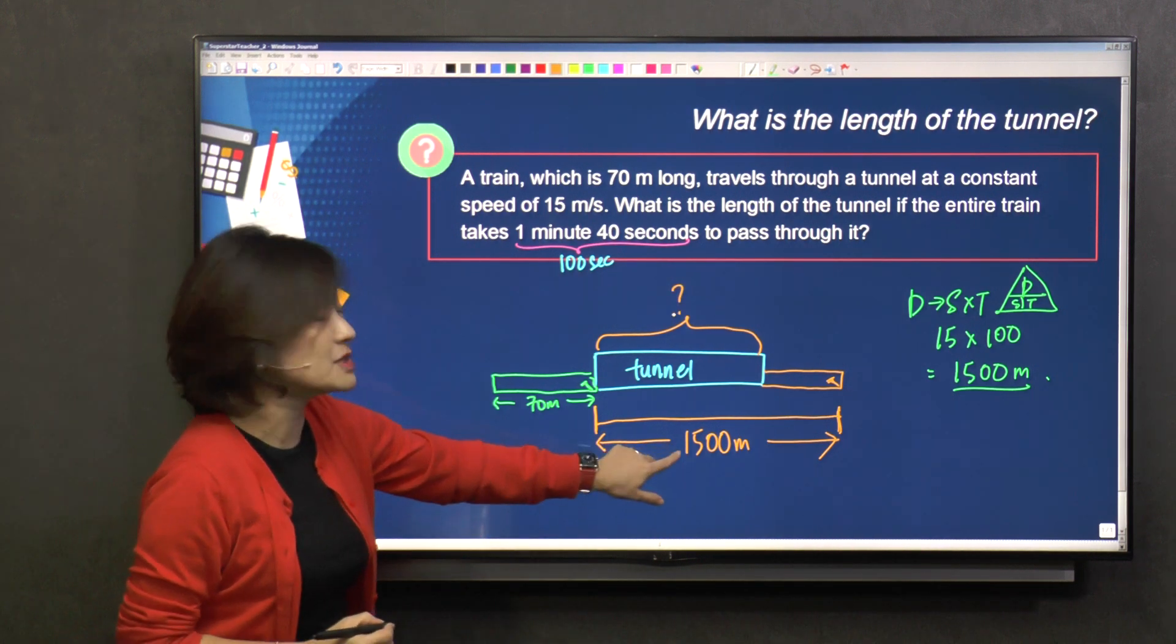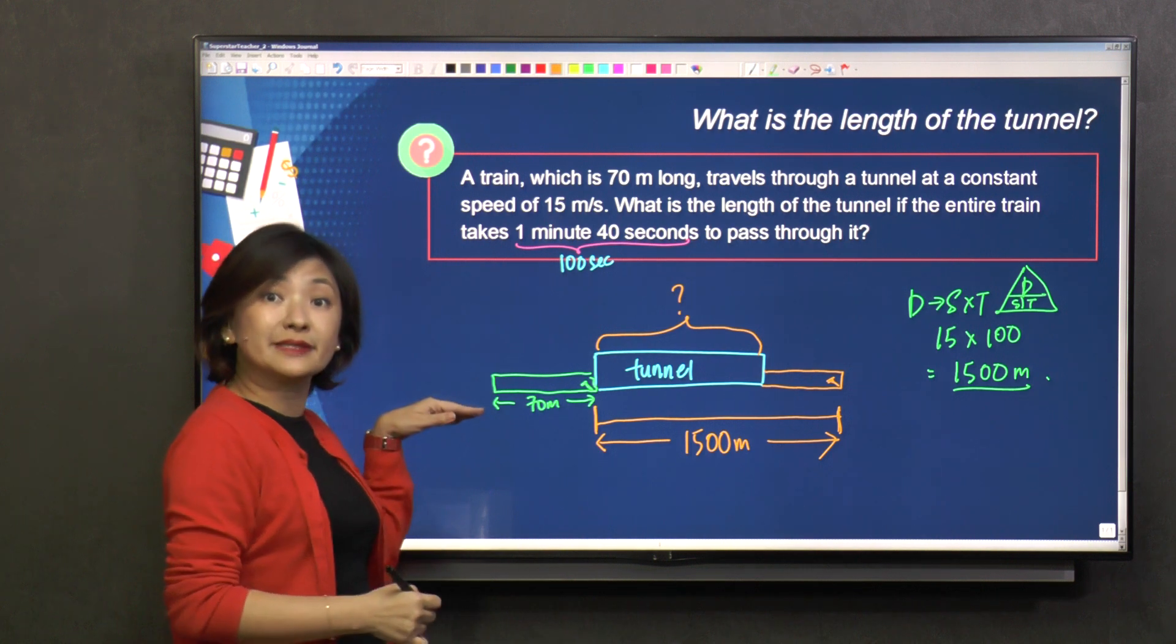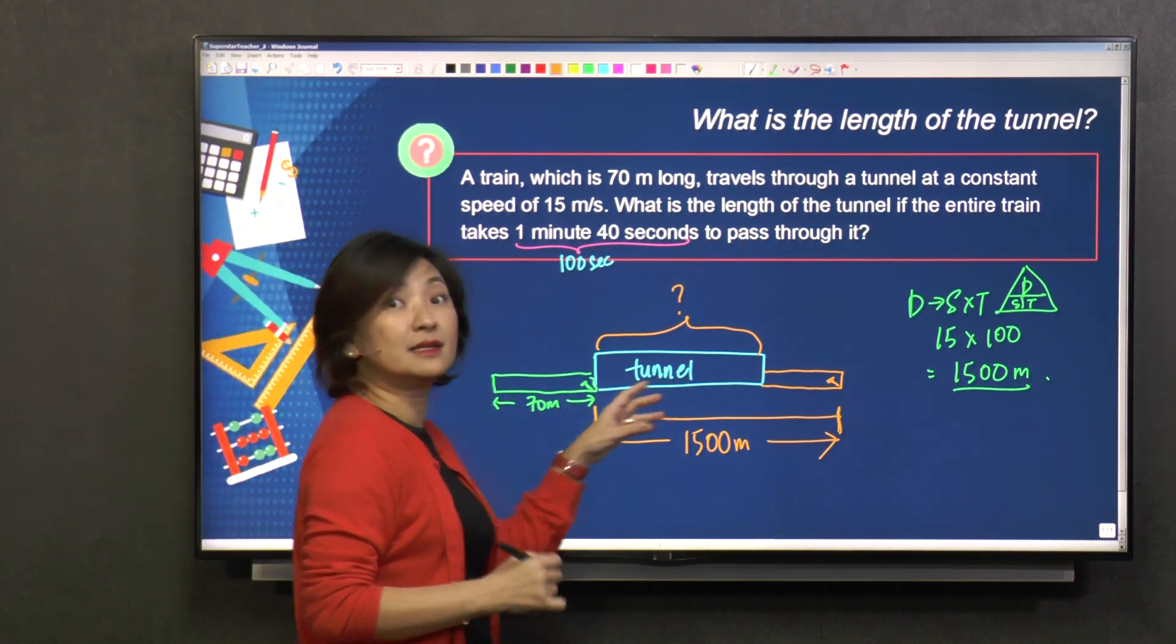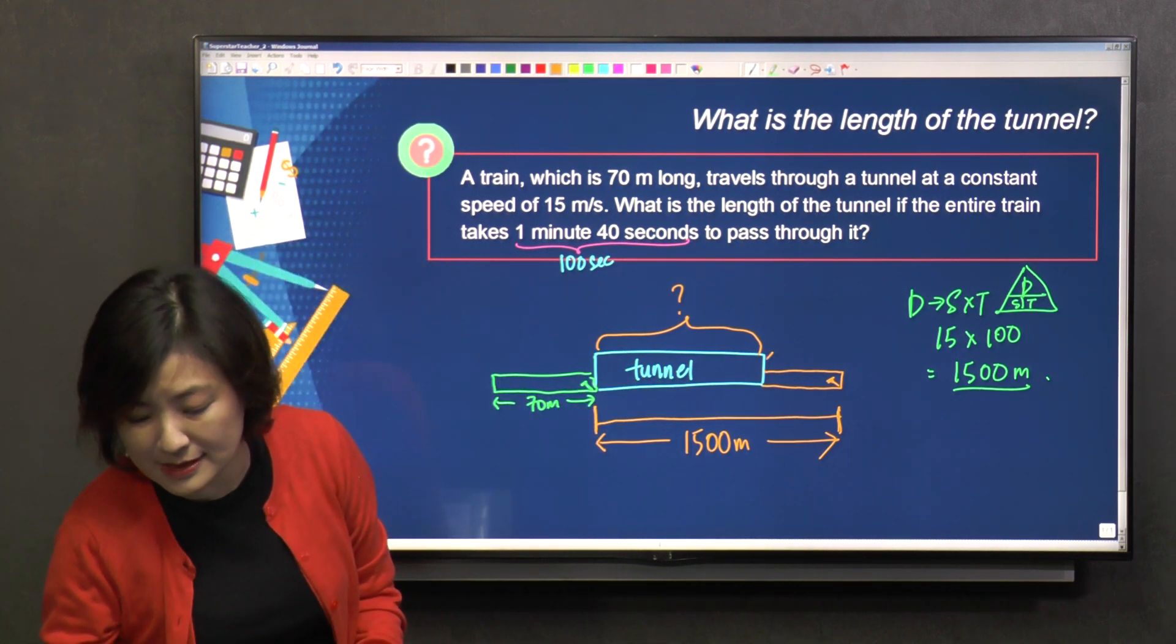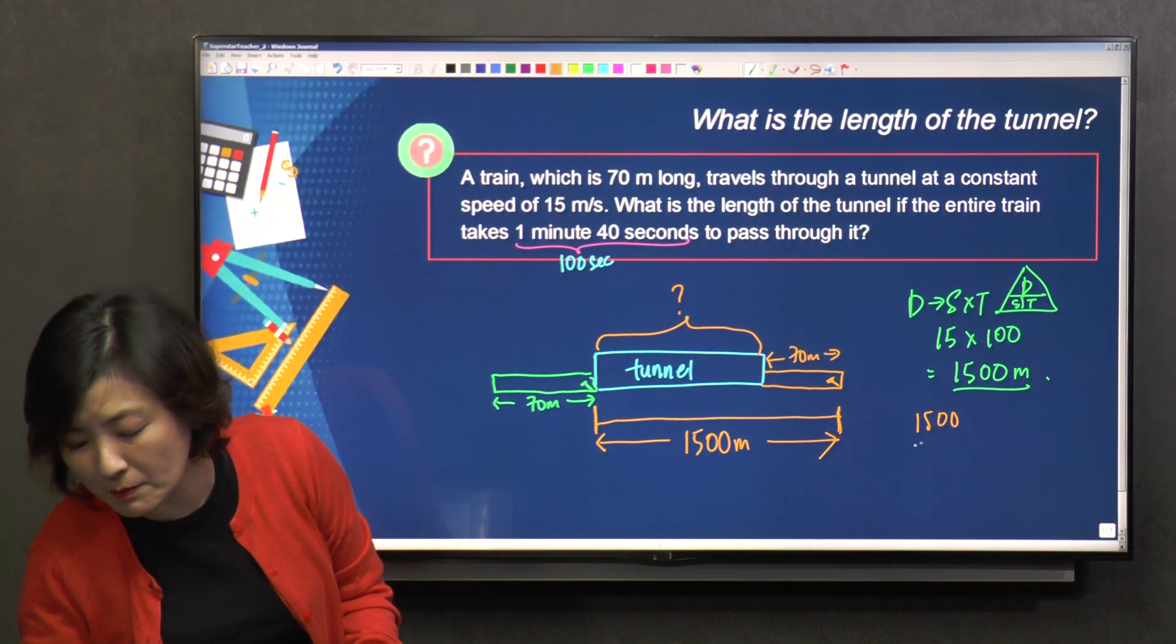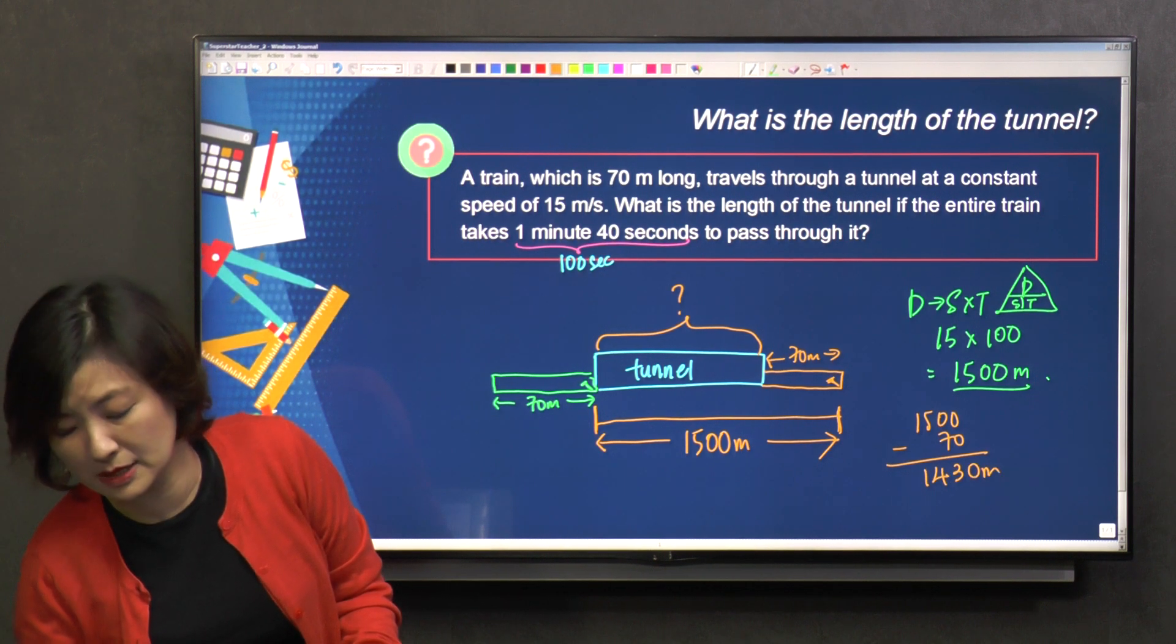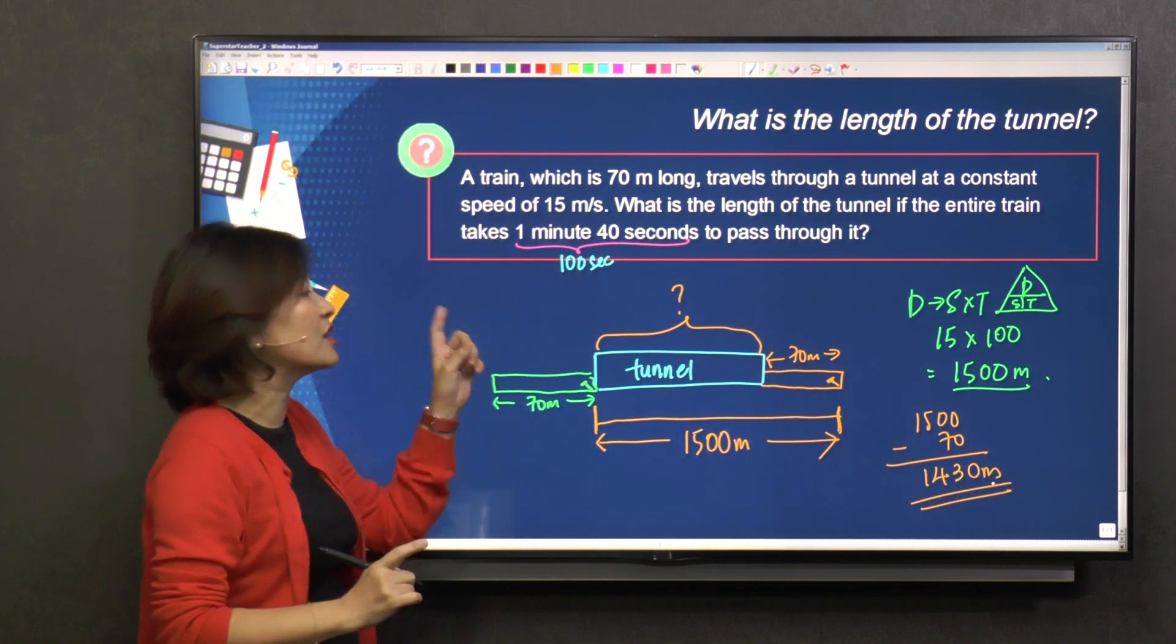So what should you do with the 1,500? 1,500, you go to minus the length of the train. As the train goes through the tunnel, it will not get shorter. So this is 70 meters. You minus 1,500 minus 70. You have 1,430 meters. That is the length of the tunnel.